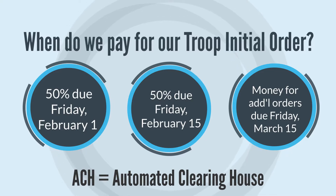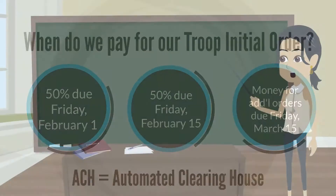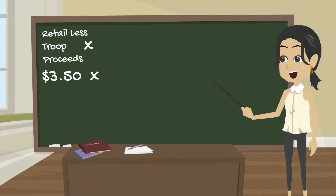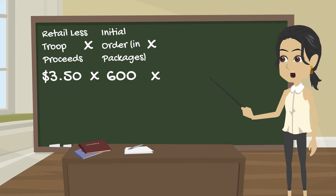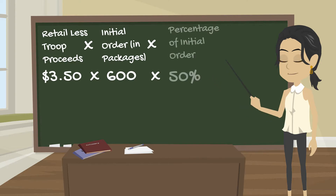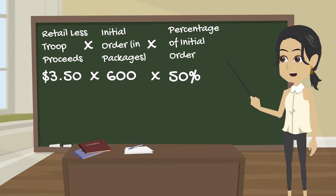If your Troop bounces an ACH, this means your Troop will not earn its cookie bonus. Trying to calculate how much you owe per ACH? Let's look at the numbers. The cost of one package of cookies is $3.50. Let's say your Troop orders 600 packages, or 50 cases of cookies, at Initial Order. Because we take payment for Initial Order in two installments, your first two ACH withdrawals will be equal to half, or 50%, of the cost of your full Initial Order.